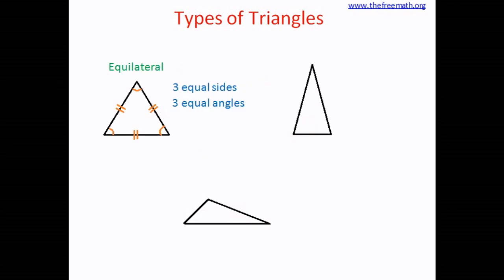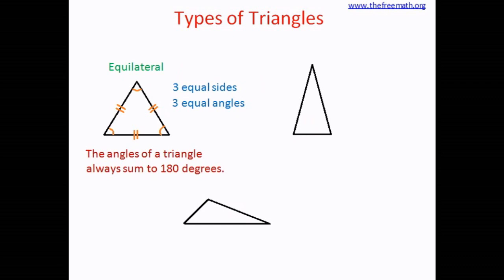All three angles of an equilateral triangle are equal, and we know that the angles of a triangle always sum to 180 degrees — we have verified that in another experiment, which you can check in another video. Since all the angles of an equilateral triangle are equal, we divide 180 by 3, so every angle is 60 degrees. You can draw an equilateral triangle and measure the angles with a protractor to verify this.